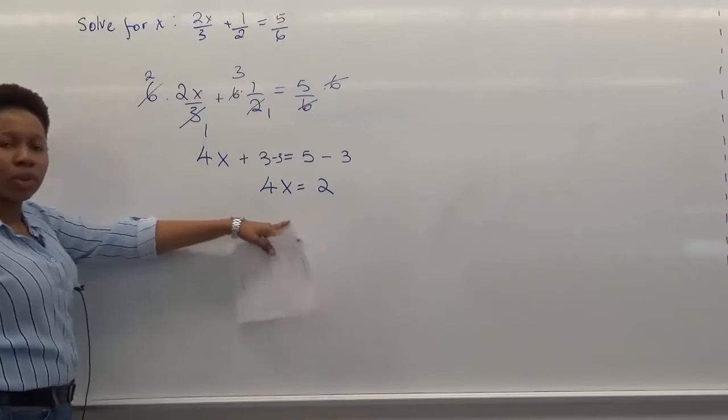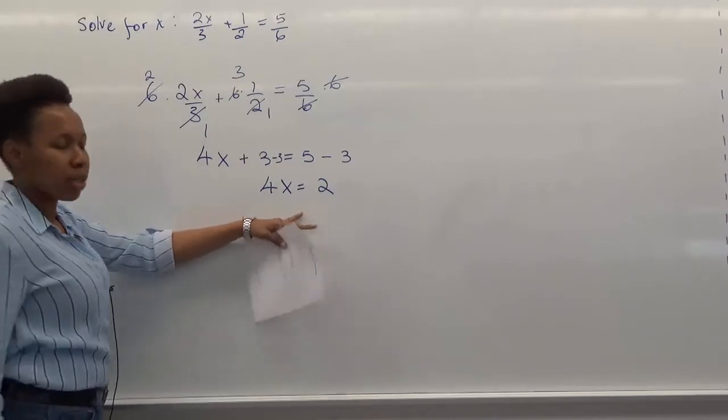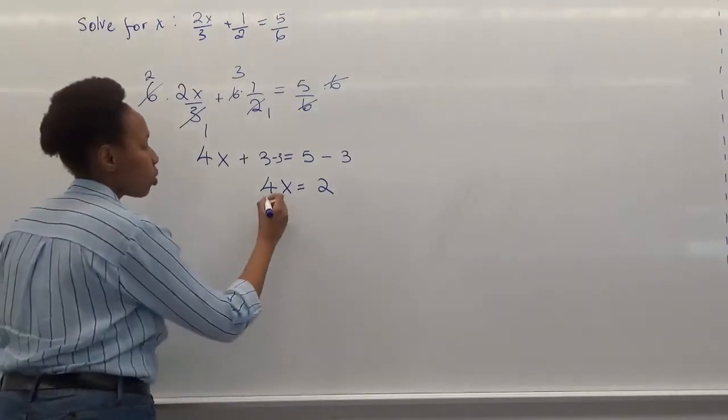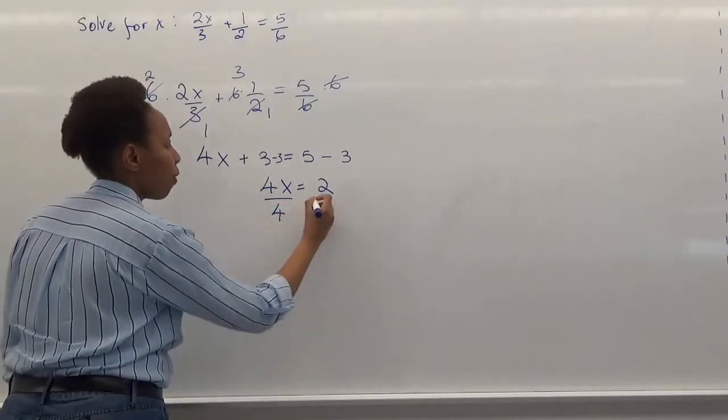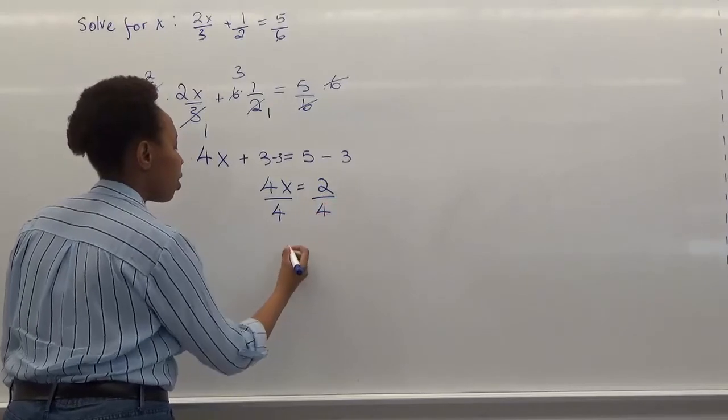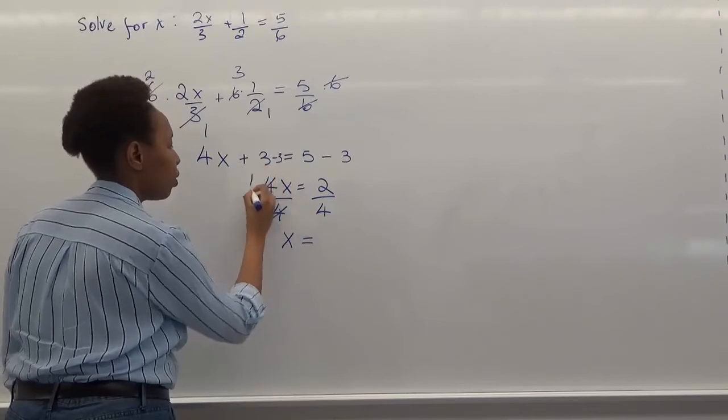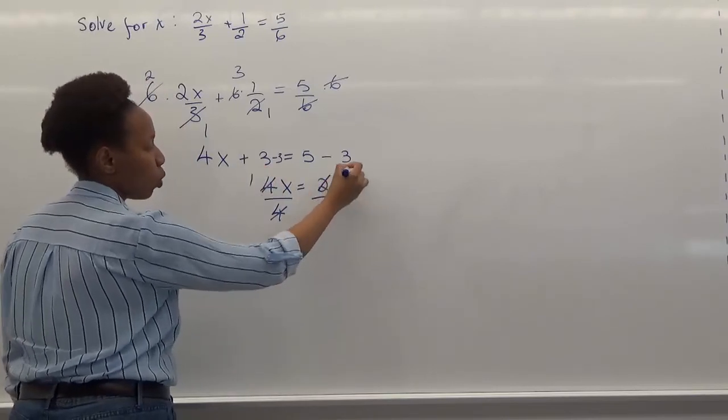And what we can do here again is divide both sides by 4, and then this 4 cancels out, leaving x alone. So this is what we have now. And then we can further simplify this value. We can further simplify this to 1 over 2.